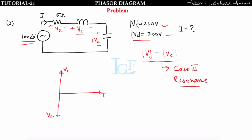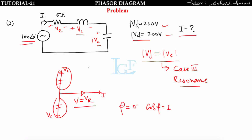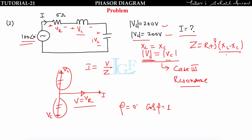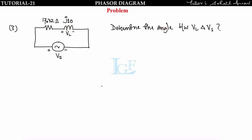At resonance (Vl = Vc), the phasor diagram shows Vl and Vc cancelling each other. Net voltage Vr = V, power factor angle φ = 0°, power factor = 1. The impedance Z = R + j(XL − Xc) = R (since XL = Xc). Current I = V/R = 100∠0°/5 = 20 A∠0°.